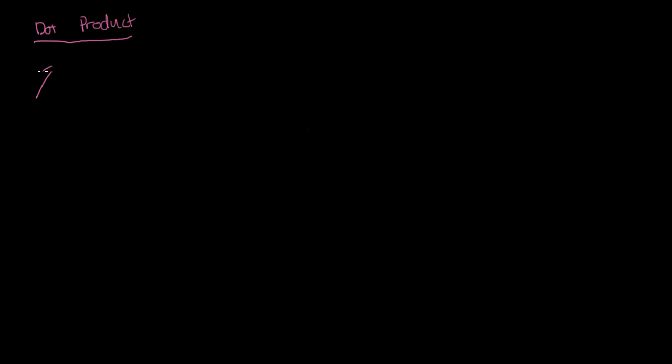Let's complete our discussion of vector multiplication by looking at the dot product and the cross product. Earlier we looked at scalar-to-vector multiplication, where you just scale the length of the vector by the scalar — thus the name scalar. Now we're going to look at what happens when you multiply two vectors. Unlike scalar multiplication, there are actually two kinds of vector-vector multiplications. The first is the dot product: you have vector A, you have vector B, and you take one vector and project it onto the other.